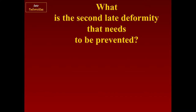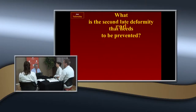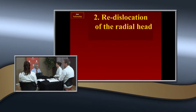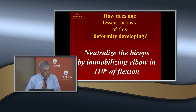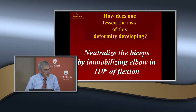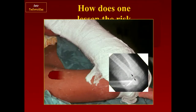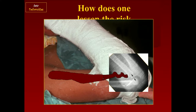The other deformity that can occur is radial head subluxation or dislocation. What force causes that? The biceps. You neutralize the biceps by moving the elbow into about 110 degrees of flexion. Since there's not a fracture there, they can tolerate that — whereas you wouldn't do that in a supracondylar fracture, as we'll discuss in another session.